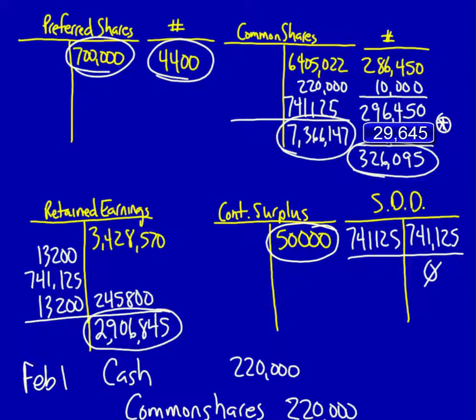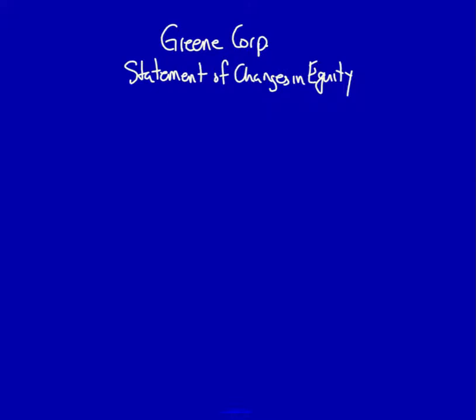At the end of our last video we did a total for each of the T-accounts. This will give us the necessary information to create the statement of changes in equity. Make sure you have this information listed down because I'm not going to refer back to it. The statement of changes in equity is always in column form. It starts with the title, which includes the name of the corporation, the name of the statement, and the date. In this case it's a period of time, so we have to state 'year ended.' The columns go in the same order as the accounts in the shareholders' equity section of the statement of financial position, also called the balance sheet.